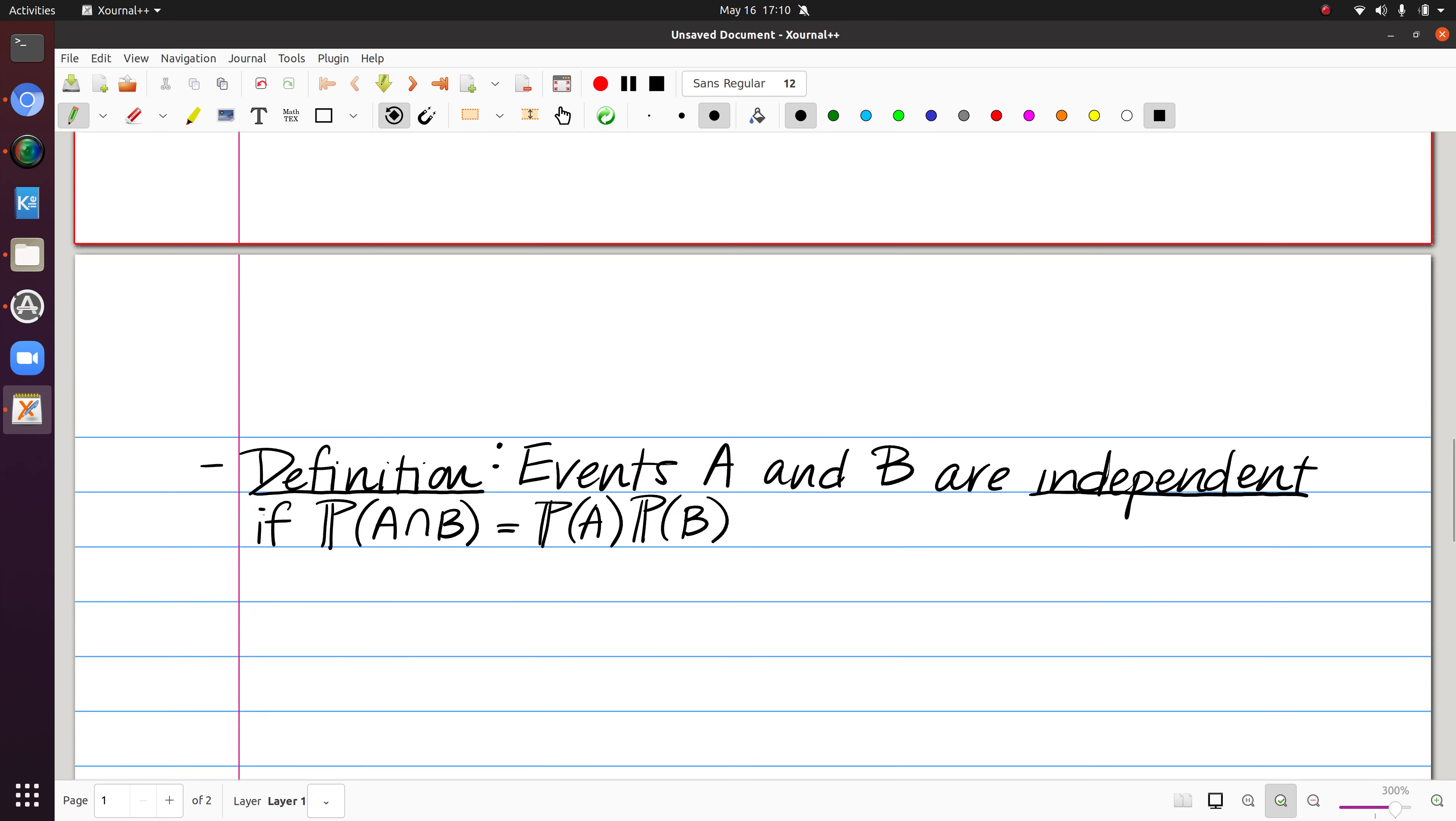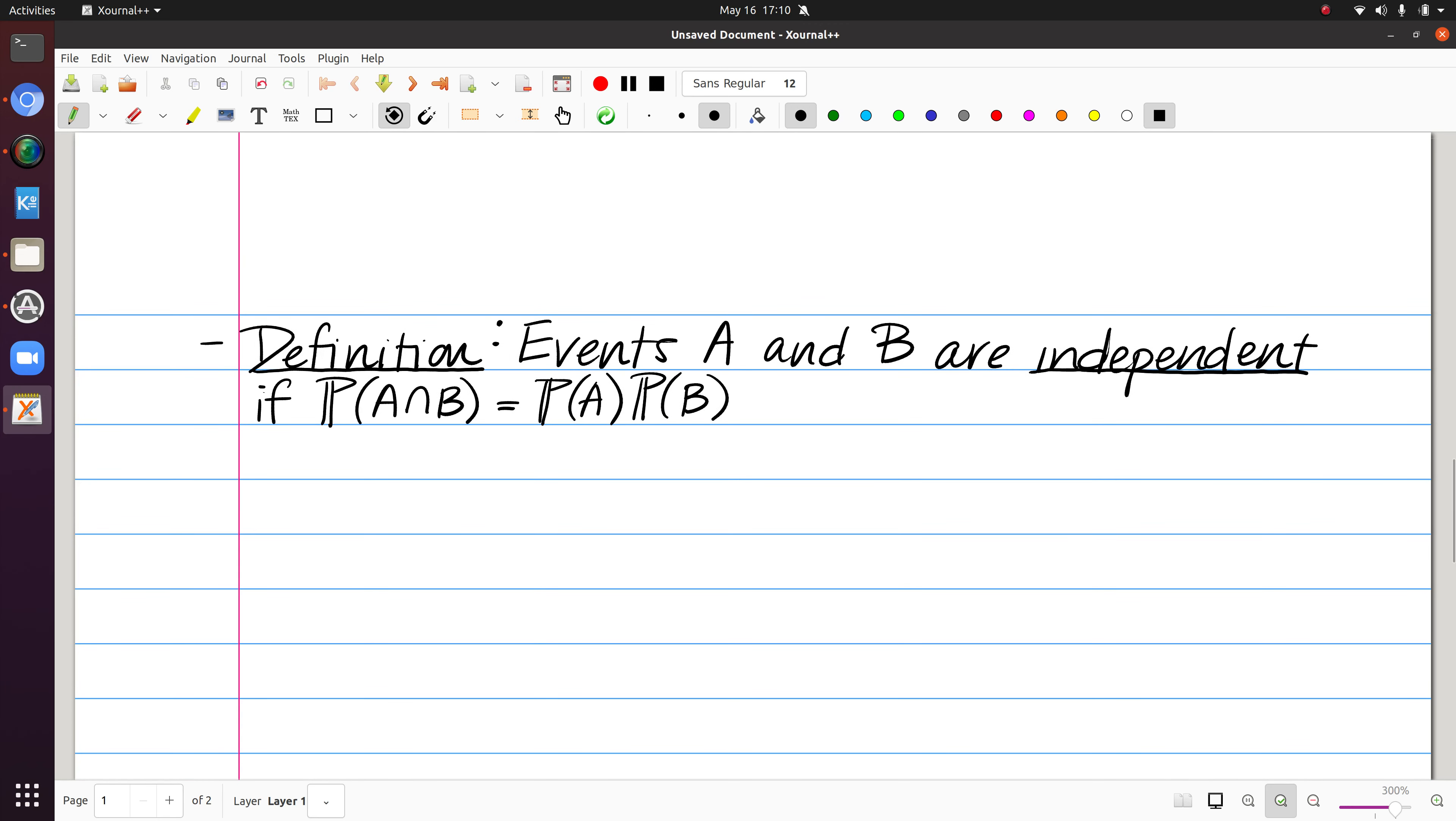Another thing we want to talk about here is a new definition. This corresponds to a relationship between events A and B. We're going to say that these events are independent if the probability of A and B is equal to the product of the probability of A and the probability of B. So this is our mathematical definition. So anytime you encounter a problem that refers to independence or asks you to check independence, you always need to be able to come back to this equation.